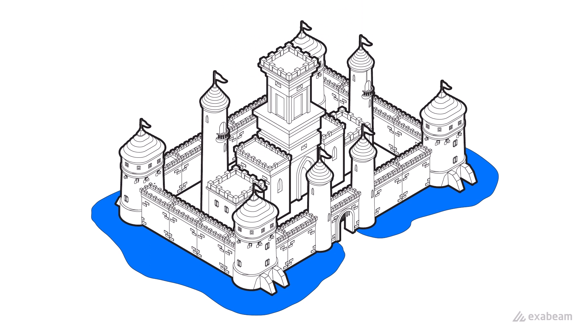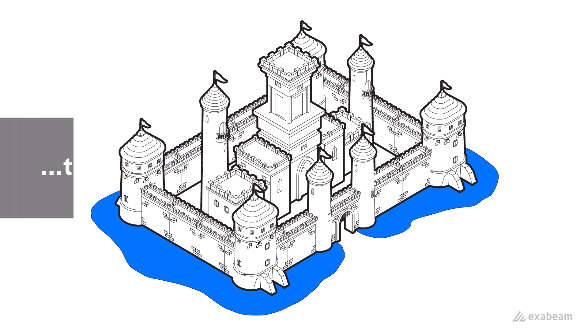Castle defenses are designed to thwart intrusion in every way imaginable. They have moats encircling them, filled with deep water, solid, tall, virtually impenetrable walls with parapets, battlements, as well as other architectural designs, allowing defenders to repel and reciprocate attacks, and usually just a single point of entry over the drawbridge and through the gate, which itself was heavily fortified. Cybersecurity employs the same defense in depth strategy, appropriately known as the castle approach.